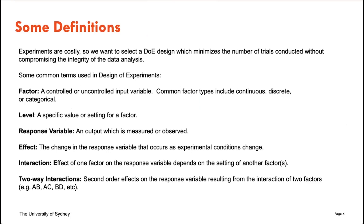The goal of DoE is to minimize the number of trials conducted without compromising the integrity of the data analysis. Some key terms: a factor or feature is a controlled or uncontrolled input variable — in simulations this can be things like tectonic plate shifts. Levels are specific values or settings for a factor; each factor can have multiple levels depending on how fine-grained you want the sensitivity. The response variable is the output, such as elevation. An effect is the change in the response variable. Interactions occur when multiple factors affect the response depending on each other.